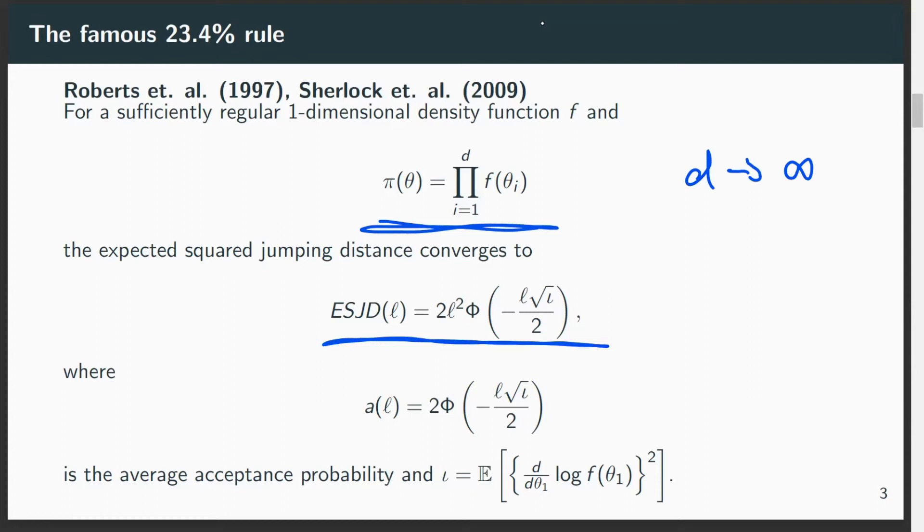The expected squared jumping distance is a measure of how well your Markov chain mixes or performs, and the closed-form expressions enable us to optimize this function with respect to L and provide tuning guidelines. For example, by plugging in the optimal value, we find that the acceptance rate is 23 percent as d goes to infinity.